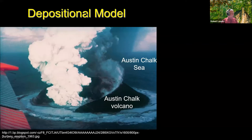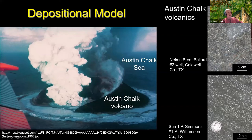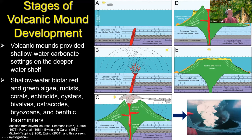Let's get to work on a depositional model. This is our volcano — you can think of this as one of the volcanoes in the Austin chalk, with the Austin Sea in deeper water around it. Here are the stages of volcanic mound development, modified from several papers — Simon and Luttrell from the 1960s and 70s, Roy in the 1980s, Erwin who worked on Austin chalk volcanics over a long period, Michael Tapping, and Rob and I with our own modifications.